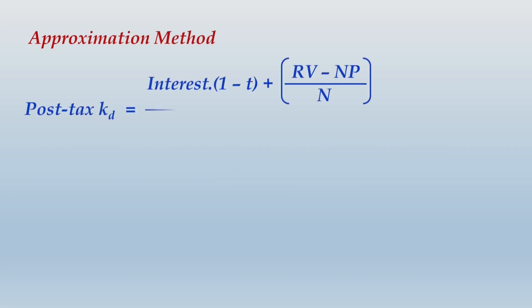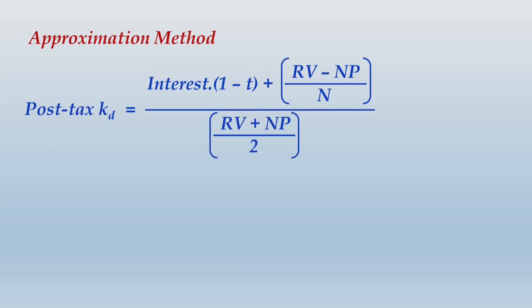The approximation method uses the formula: Kd = [Interest × (1 − t) + (RV − NP) / n] / [(RV + NP) / 2]. Interest is the major component of cost of debt and has the benefit of tax, so (1 − tax rate) is applied to convert it to post-tax interest. The second segment is the difference between RV and NP divided by n, the life of debt.